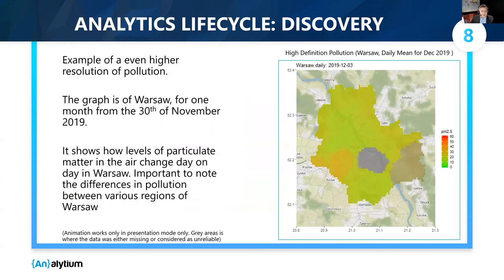Using open source R, we've developed a predictive model for Warsaw using the Kriging algorithm. It shows how pollution varies across the city for several weeks in December 2019.